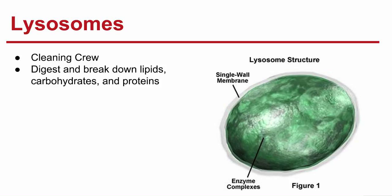Next we have the lysosomes — the cleaning crew of the factory. They're small organelles filled with enzymes, and they digest and break down lipids, carbohydrates, and proteins. One of their most important functions is the breaking down of organelles that are no longer useful — they break those down and recycle them into nutrients.